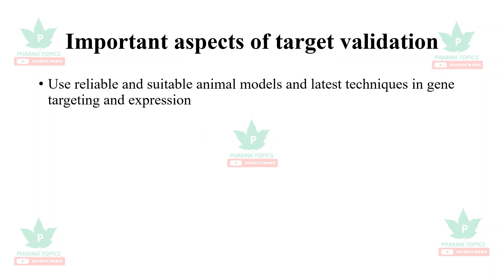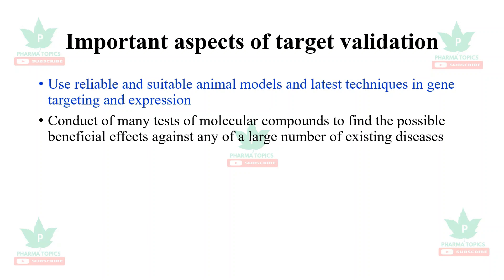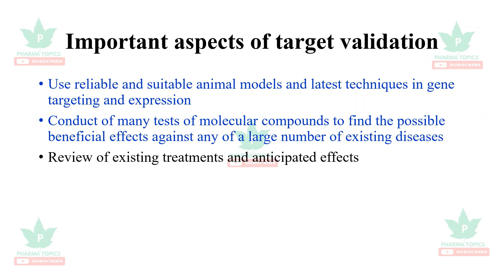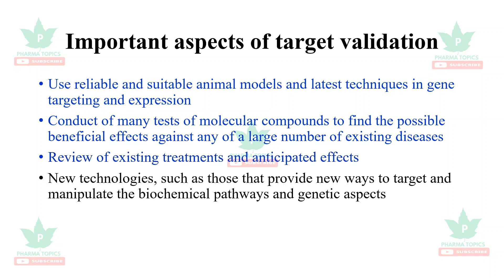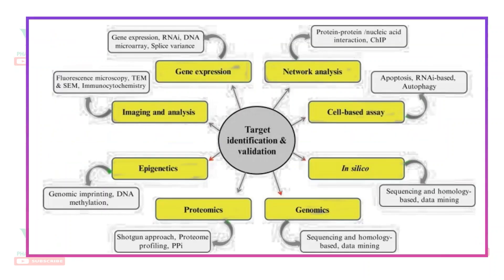The important aspects of target validation are: use of reliable and suitable animal models, and the latest techniques in gene targeting and expression; conduct of many tests of molecular compounds to find possible beneficial effects against a large number of existing diseases; review of existing treatments and anticipated effects; and application of new technologies that provide new ways to target and manipulate biochemical pathways and genetic aspects.